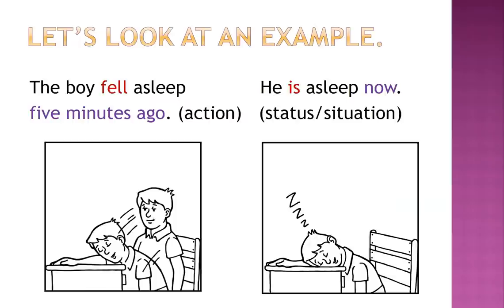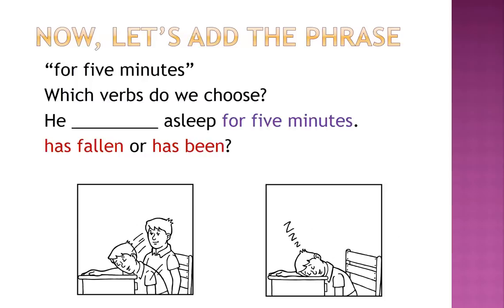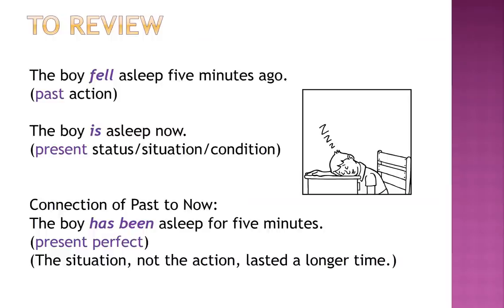Let's look at an example. 'The boy fell asleep five minutes ago' — that's when the action occurred, that's when he started sleeping. 'He is asleep now' — this is referring to his status or situation. Now let's add the phrase 'for five minutes.' Which verb do we choose — 'has fallen' or 'has been'? He has been asleep for five minutes. To review: 'The boy fell asleep five minutes ago' is a past action. 'The boy is asleep now' is present status, situation, or condition.